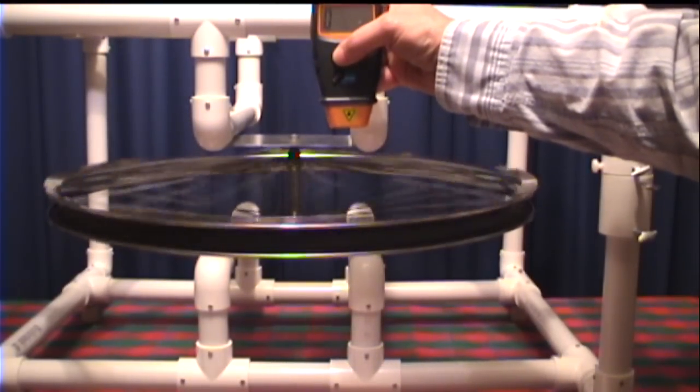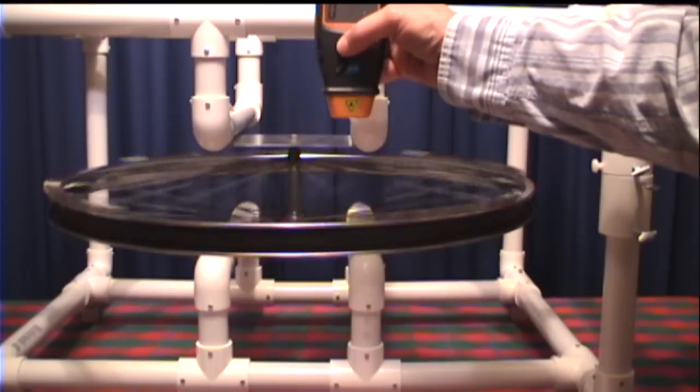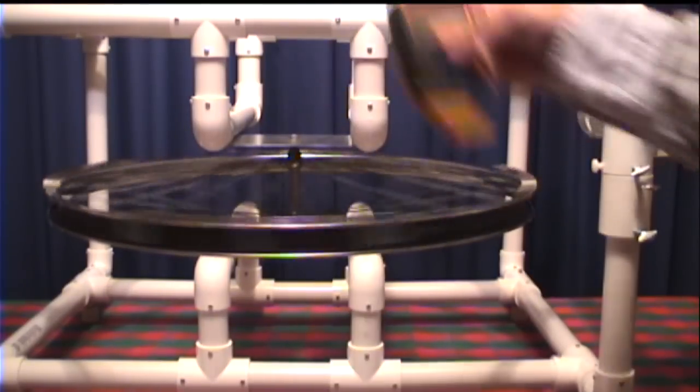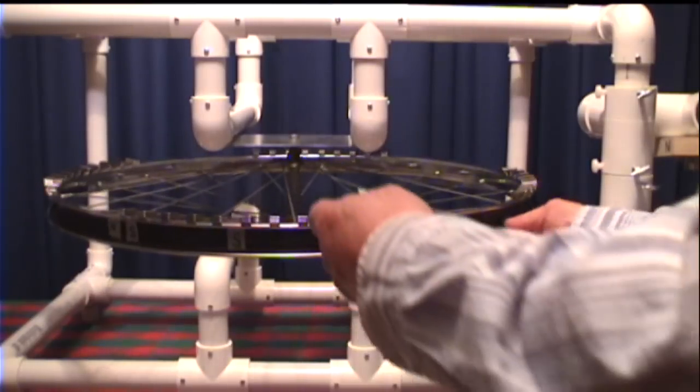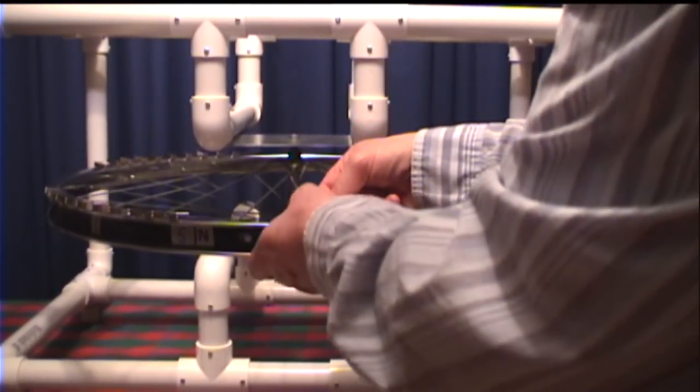Now, inside against the spokes, there's not enough reflection to get a reading. See that? So that's where I'm going to take my reading. I'm going to place the sensing strip on one of the spokes.